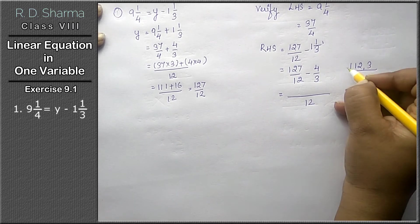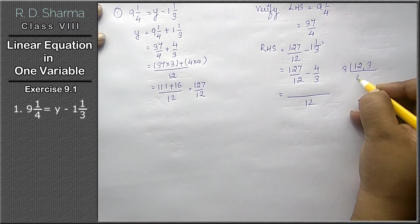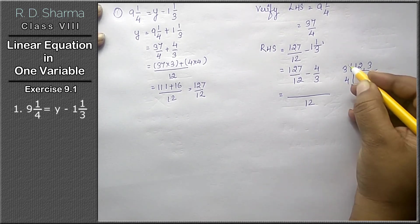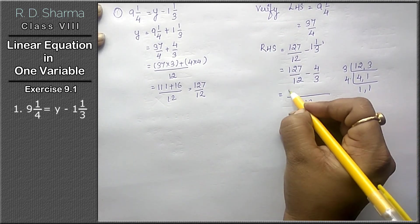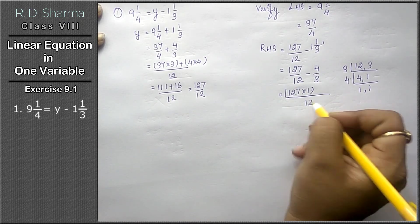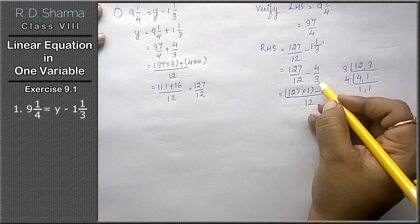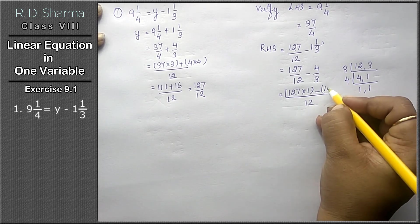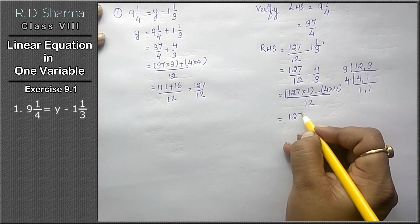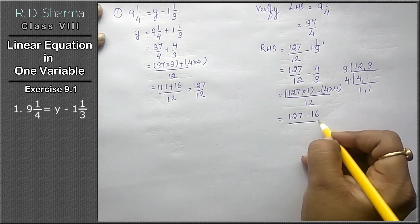LCM of 12 and 3 is 12. 12 divided by 12 is 1, so 127 multiplied by 1. Minus 12 divided by 3 is 4, so 4 multiplied by 4 is 16. So 127 minus 16 upon 12.